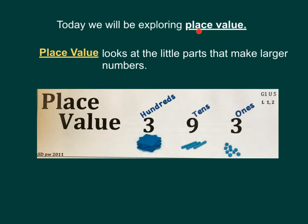Today we will be exploring place value. Place value looks at the little parts that make larger numbers. For example, when we look at the number 393, place value lets us see all the little parts that build that big number. I can tell that there are 3 ones, there are 9 groups of 10, and there are 3 groups of 100 to build that big number 393. So it lets me see all of those separate parts.